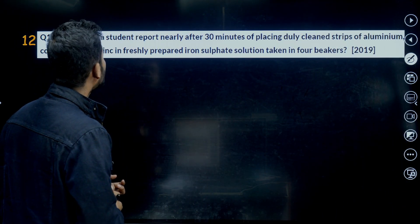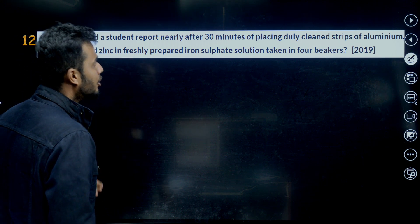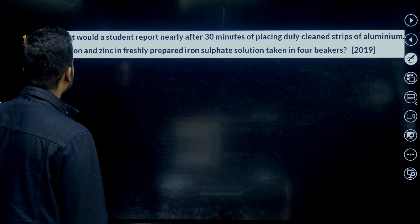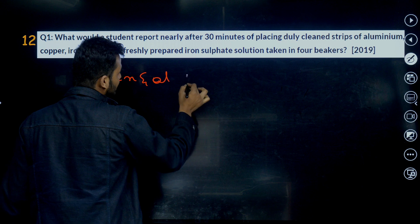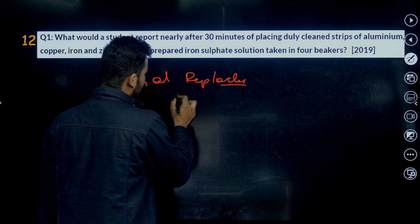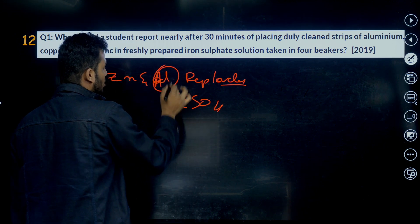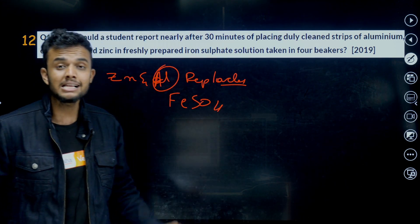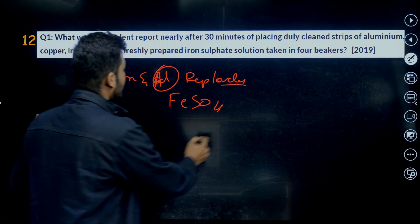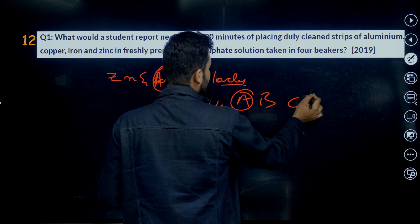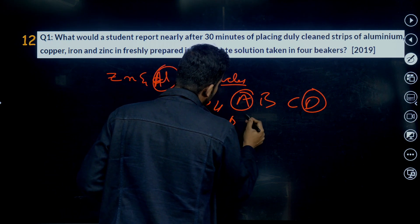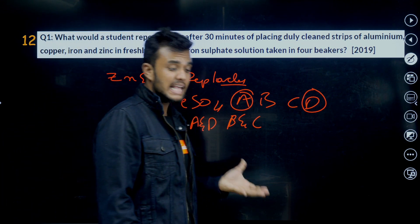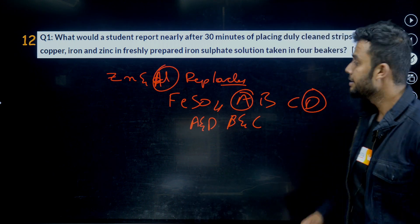12th question. What would students observe after 30 minutes of placing duly cleaned strips of aluminum, copper, iron and zinc in freshly prepared iron sulfate? Iron, aluminum, copper, iron and zinc. Zinc and aluminum replace iron, changes the color of iron in the iron sulfate. Why? Zinc and aluminum - sorry, this is one Al - zinc and aluminum compared to iron, it is a highly reactive metal. That's why it replaces the metal in the metal solution. Then A, B, C, D. In A and D, zinc is there. A and D, reaction happens. B and C, never the reaction happens. Why? Compared to iron, iron cannot replace iron only. And also copper. Copper is less reactive or least reactive compared to iron.